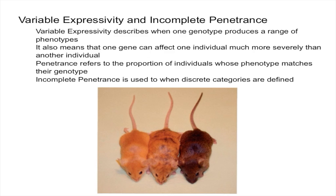Now let's talk about penetrance. By definition, penetrance refers to the proportion of individuals whose phenotype matches their genotype. For example, say you have two identical twins who both have the gene for being able to roll their tongue. However, only one of them can actually roll their tongue. Tongue rolling is therefore a trait with incomplete penetrance, because the same genotype did not produce the same phenotype.